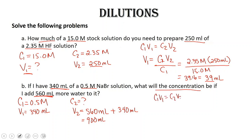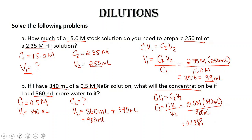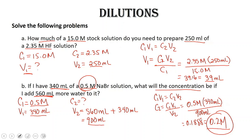Now we're solving for C2. C1V1 = C2V2, so C2 = C1V1 divided by V2. Plugging in values: 0.5 molar times 340 milliliters, all divided by 900 milliliters, gives us 0.1888. With one sig fig, this is 0.2 molar. Does this make sense? Our concentrated amount was 0.5 molar and our dilute amount is 0.2 molar — correct. Our starting volume is lower than our final volume, and our starting concentration is more than our final concentration.